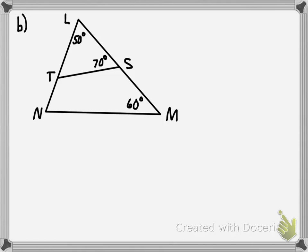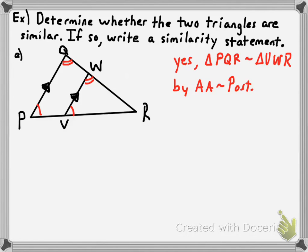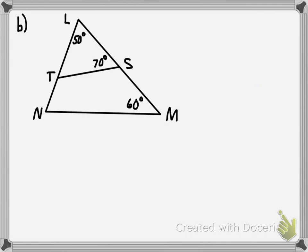Now let's look at the next picture — again, a triangle inside a triangle. In the last picture, one side of one triangle was parallel to a side of the other, but here those sides are clearly not parallel. That doesn't mean they're not similar though. Going back to the last example, angle R was part of both triangles — congruent to itself by the reflexive property. We've got that same situation here: both triangles contain angle L, so that's one pair of congruent angles by the reflexive property.